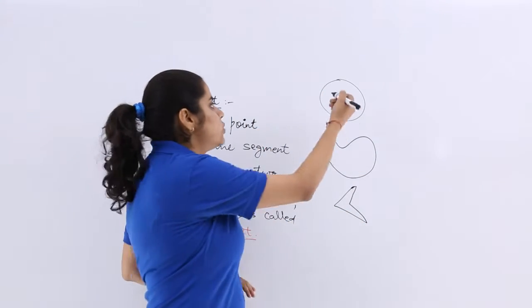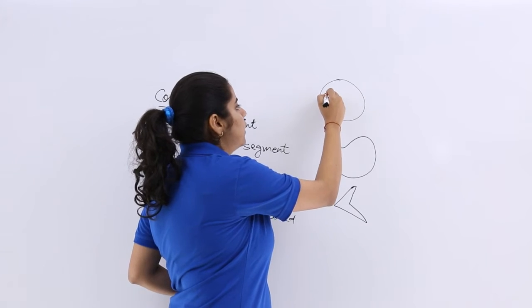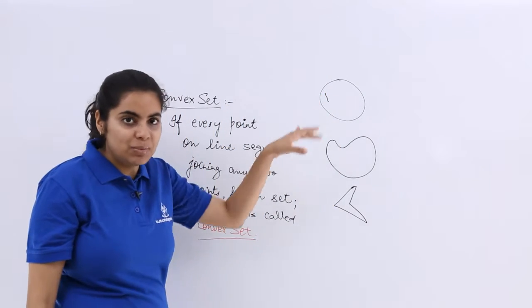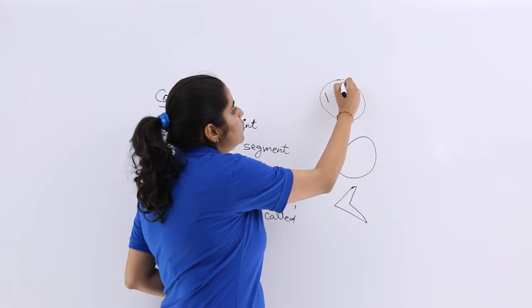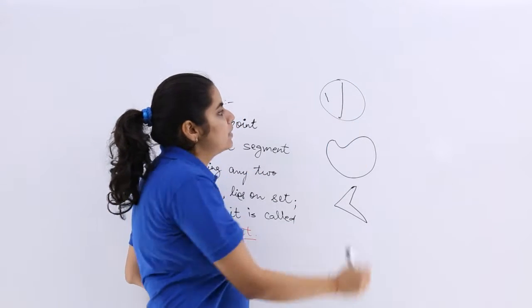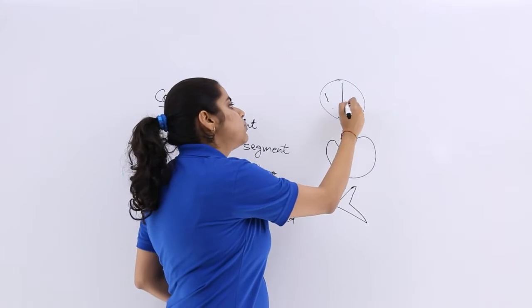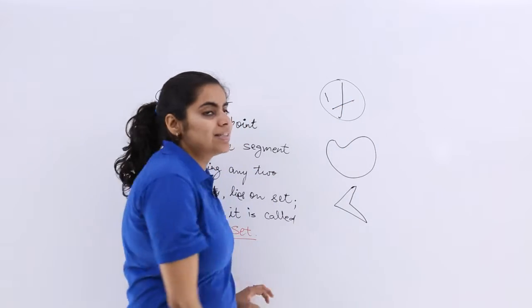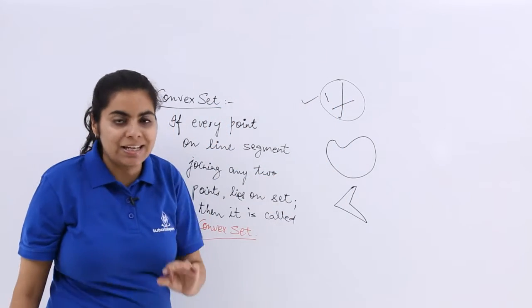So this is the first diagram. Any two points if you take, suppose you take these two points, this will be joined and this will come in the set itself. If you take this point and this point, again when you join it will come in the set itself. If you take this point, this point, then also it comes in the set itself. So this is a convex set.